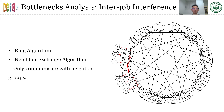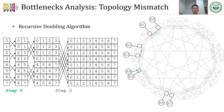Inter-job interference will occur among jobs with the same communication pattern, such as the ring algorithm and neighbor-exchange algorithm. Both of them only communicate with neighbor processes. The figure shows three jobs executing the ring algorithm at the same time, where a common global link in their minimal paths is contested — three jobs are competing for bandwidth on that shared link.